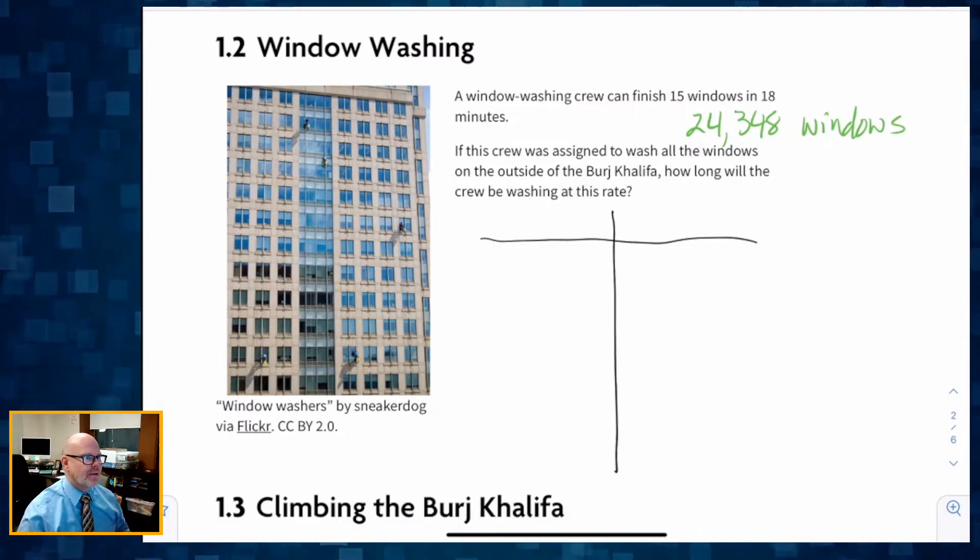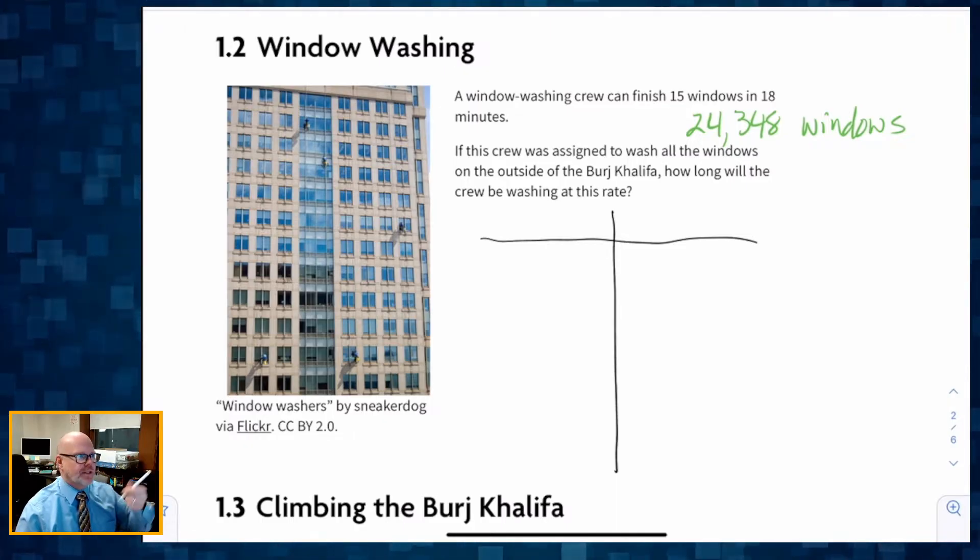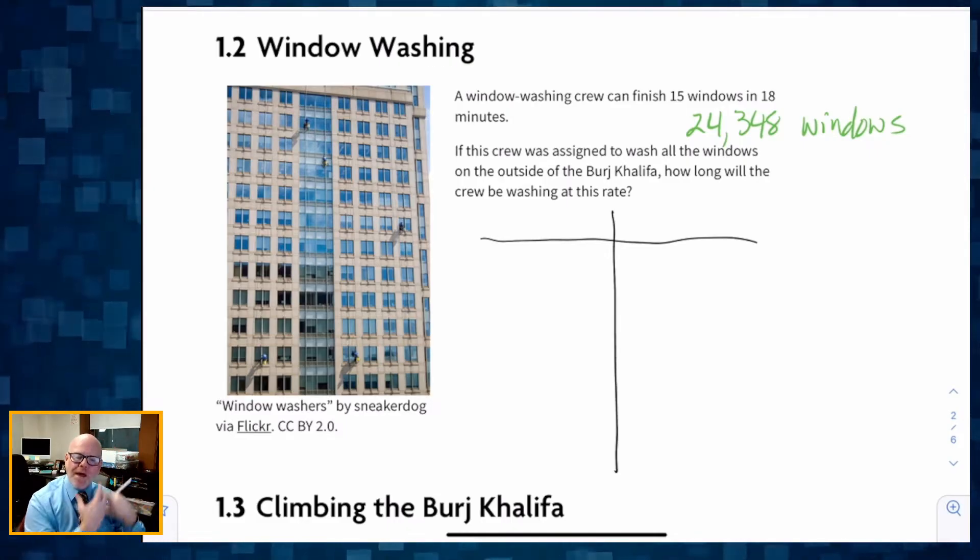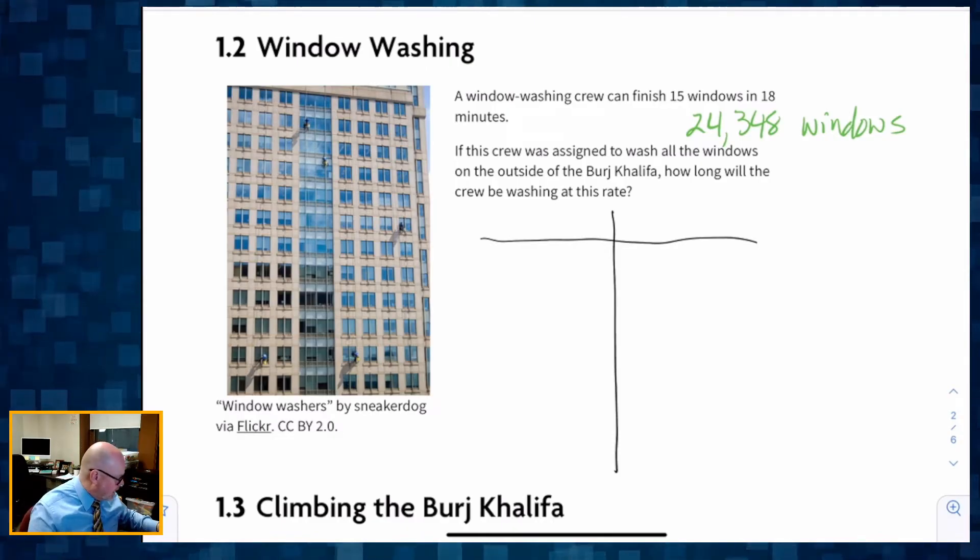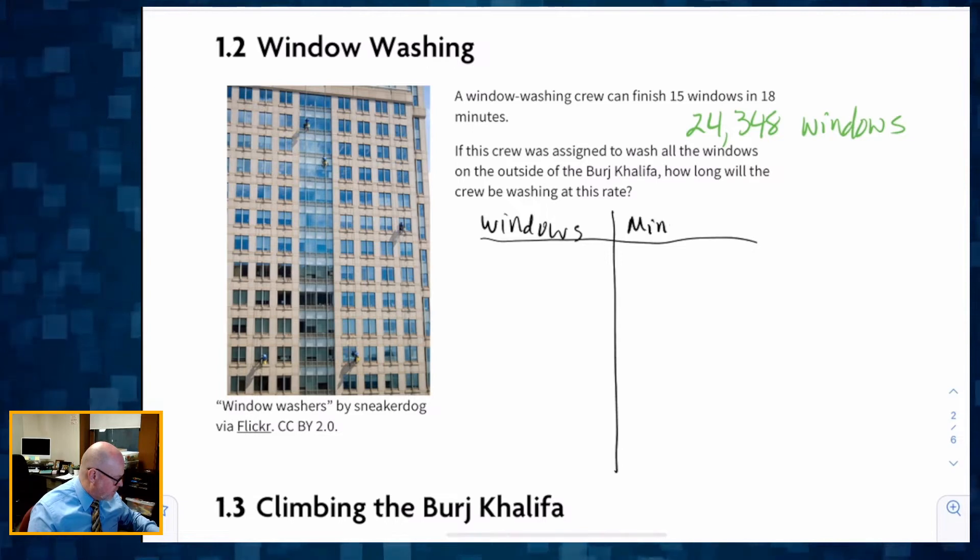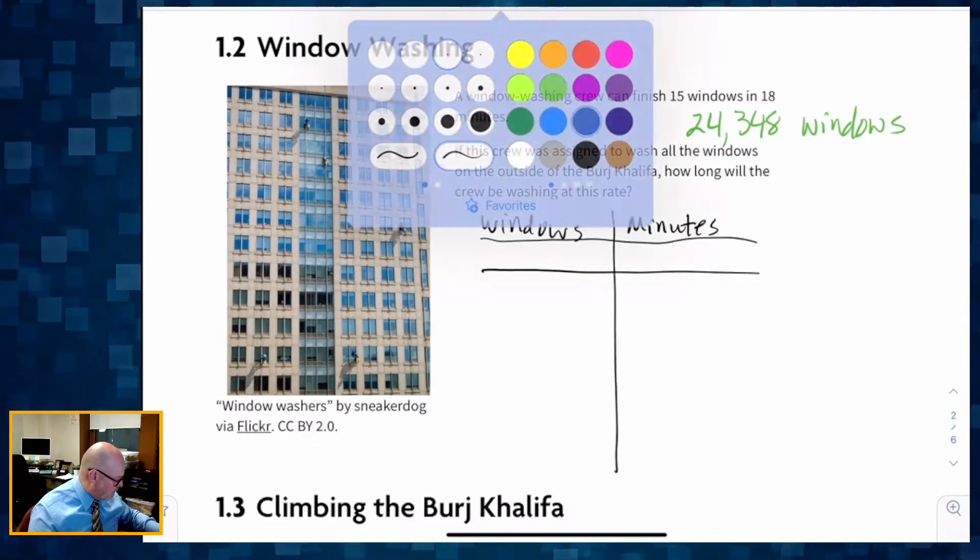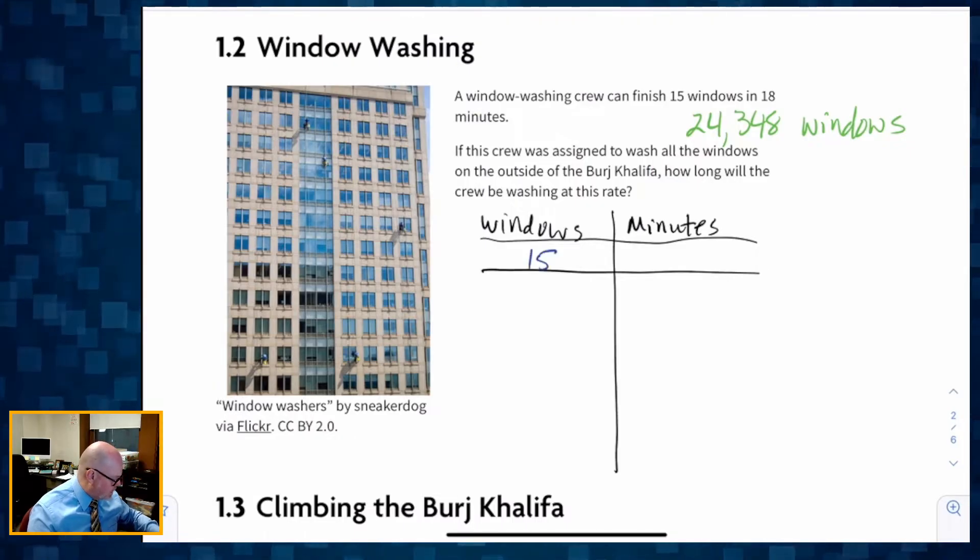So what we're going to do is I'm going to make a table. Parents and teachers, what you're going to do is allow your students some significant amount of time, about 20 minutes. They're going to work on this. And the idea is to take all of that ratio understanding from the previous unit and apply it here. So windows and then minutes is our table.